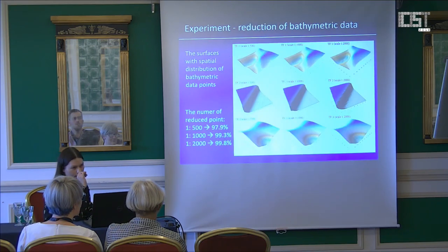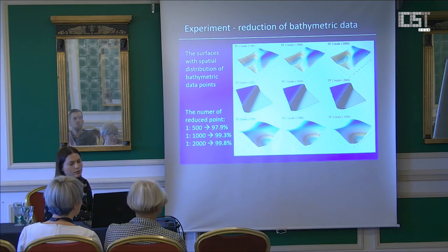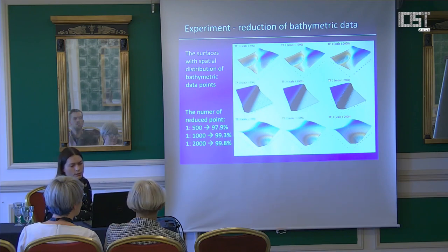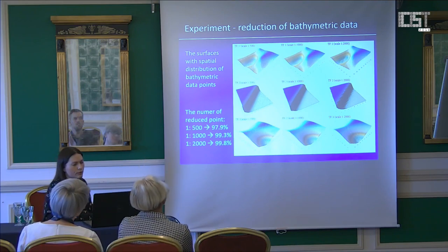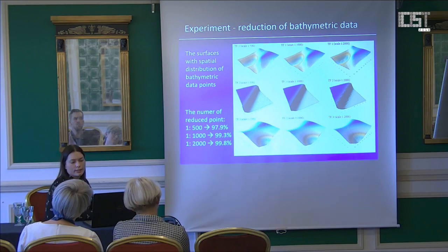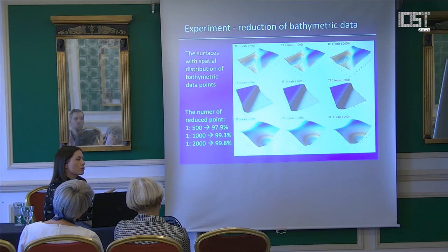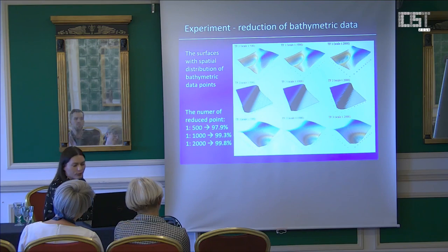The next stage of our experiment was to use artificial neural networks during the reduction of a large bathymetric data set. The larger data set was used. The created method of bathymetric geodata reduction is composed of three basic stages, with the usage of artificial neural network being the second stage. The test data set was reduced for three scales.